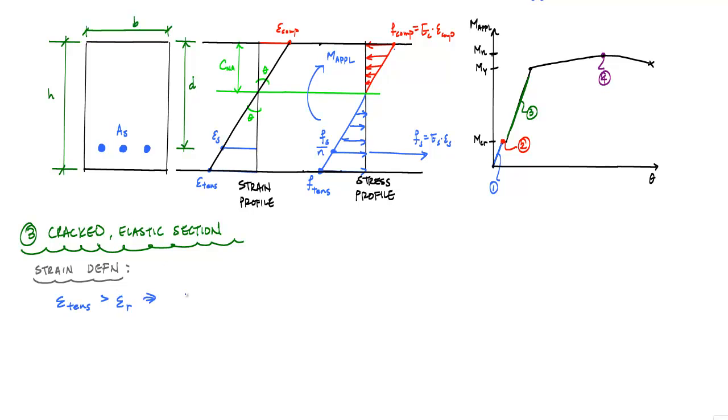which says that it's cracked. The materials are still remaining in their linear elastic region so that the steel has not yielded, and the concrete at the extreme compression fiber is still within the proportional limit.